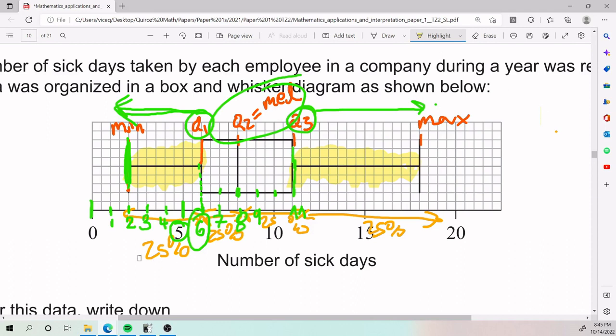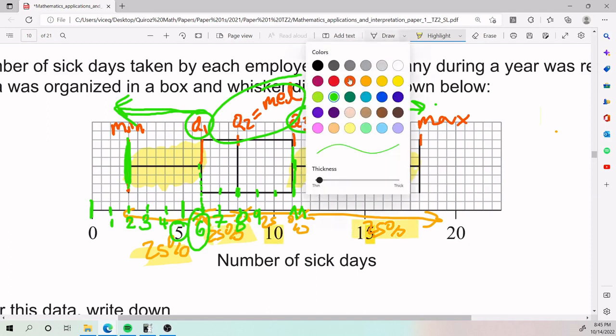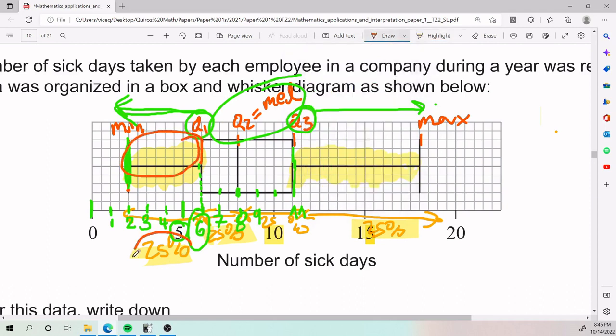But hey, this is where, you know, the intuition of a box and whisker diagram kind of kicks in. Let's remember that we were talking about percentages earlier. And so, as I said way back then, minimum to Q1 is 25%, Q1 to Q2 is 25%, Q2 to Q3 is 25%, Q3 to the maximum is also 25%.